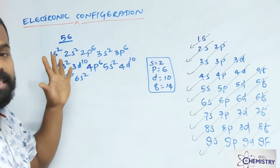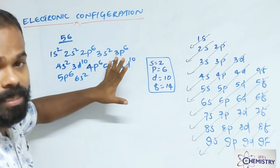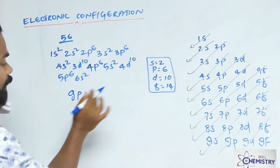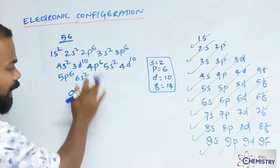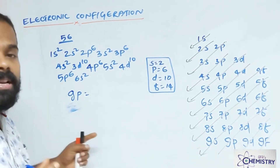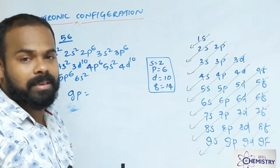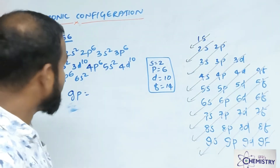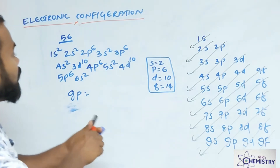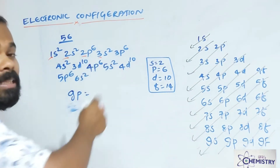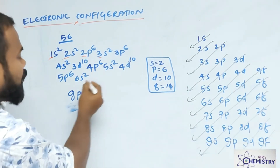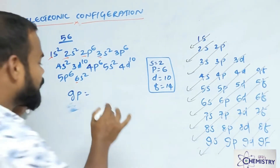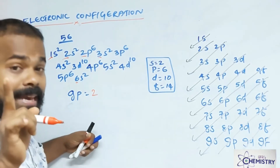For 56 electrons, we have arranged all electrons thoroughly. Now how can we check the group? First we want to count which group and which block. First, decide what is the last shell — which is the biggest principal quantum number. Here, going one, two, three like that — the biggest principal quantum number is six.